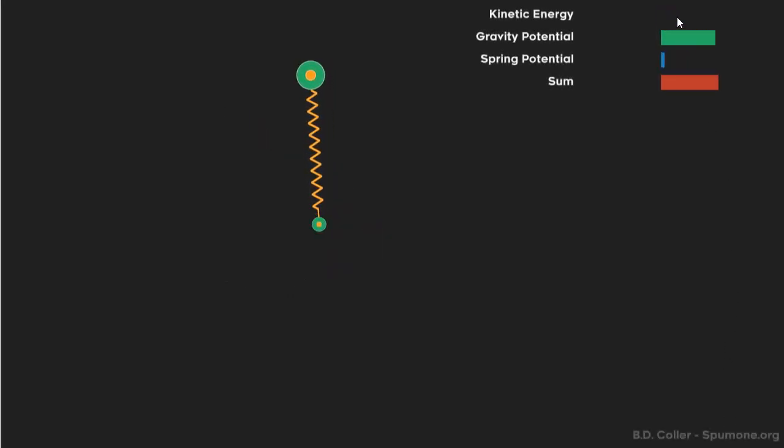So therefore, when I take its kinetic energy and the potential energy due to gravity and the potential energy due to that spring force, if I add those three things together, I get this red bar right here and it's a constant. So energy, total energy, which is the sum of these three energies right here, is constant.